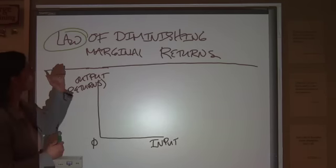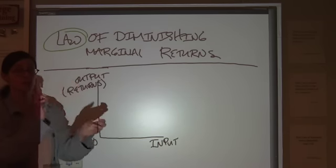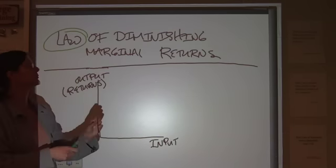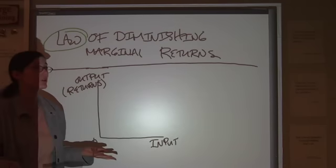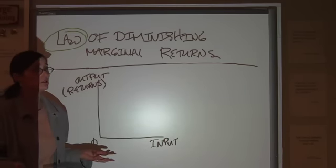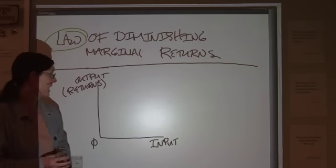So we're looking at what happens over time. You keep throwing inputs at a problem, one more unit of an input, your marginal returns are going to decrease. And you think, well, maybe. Here's what happens.